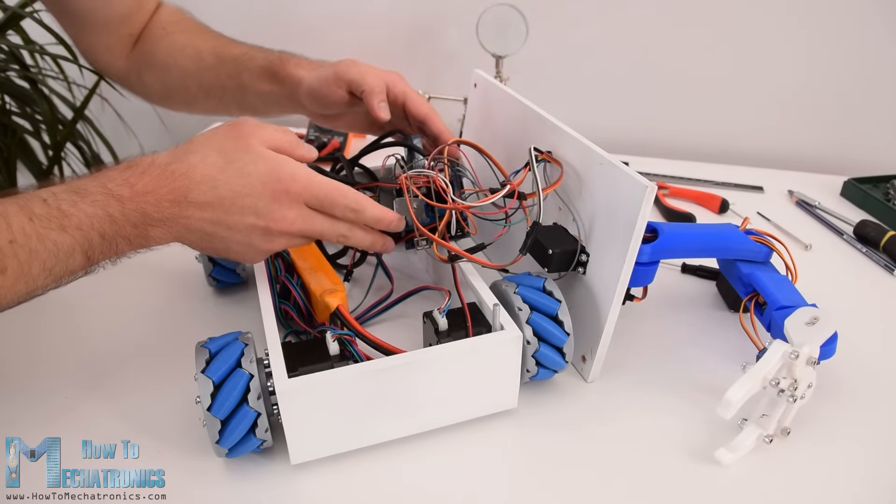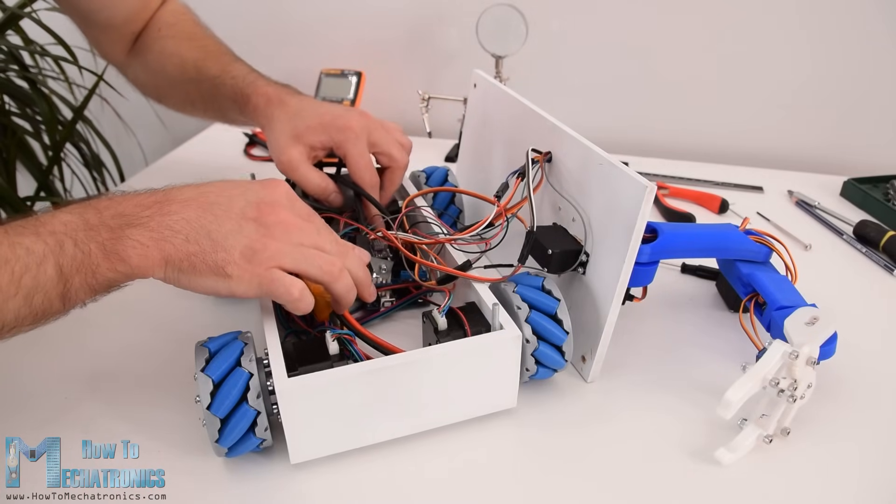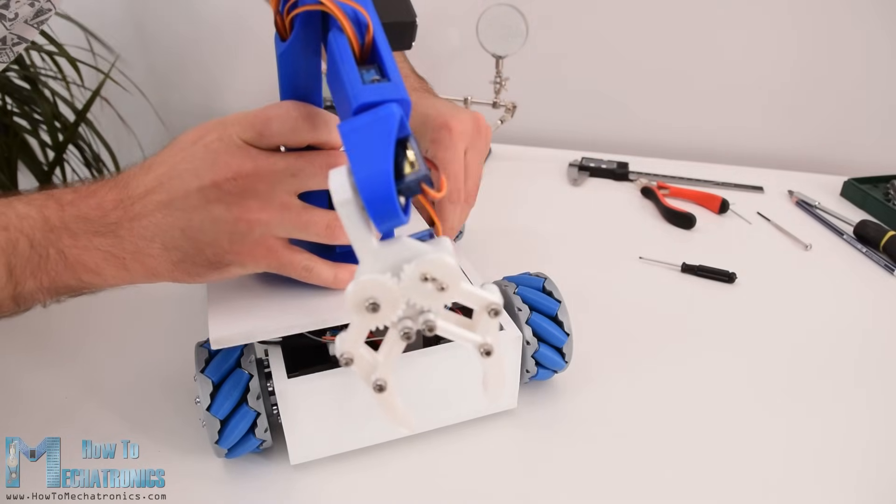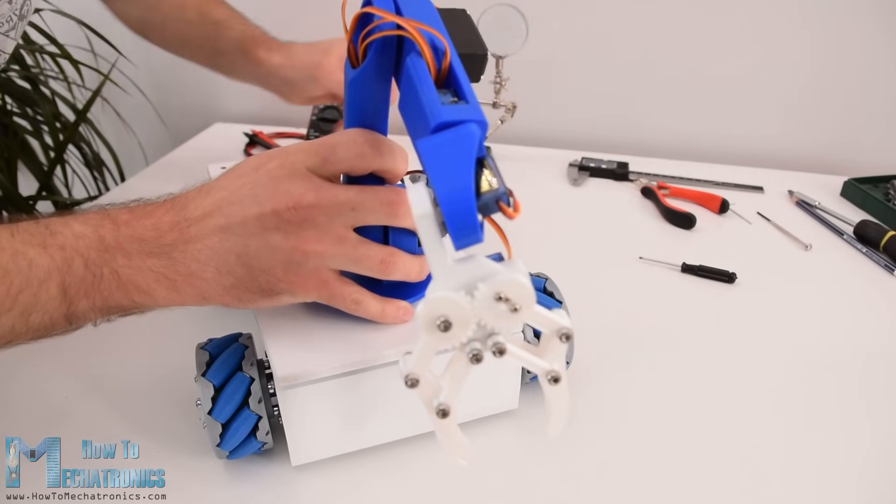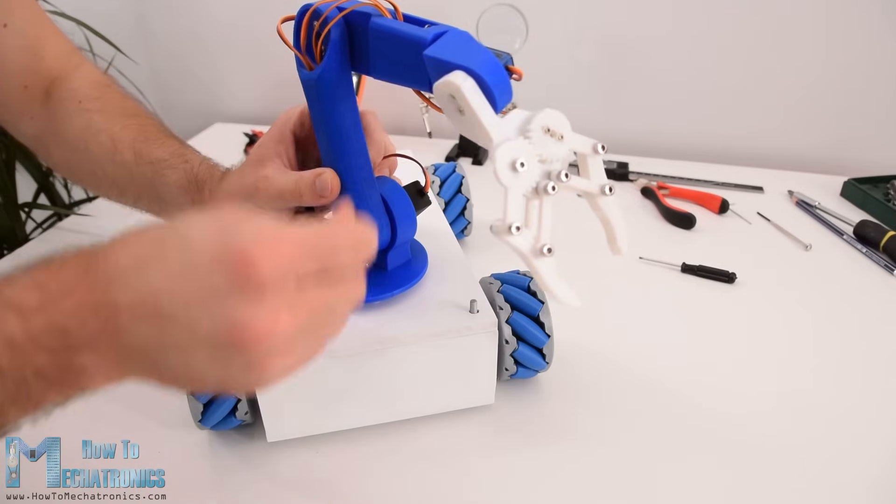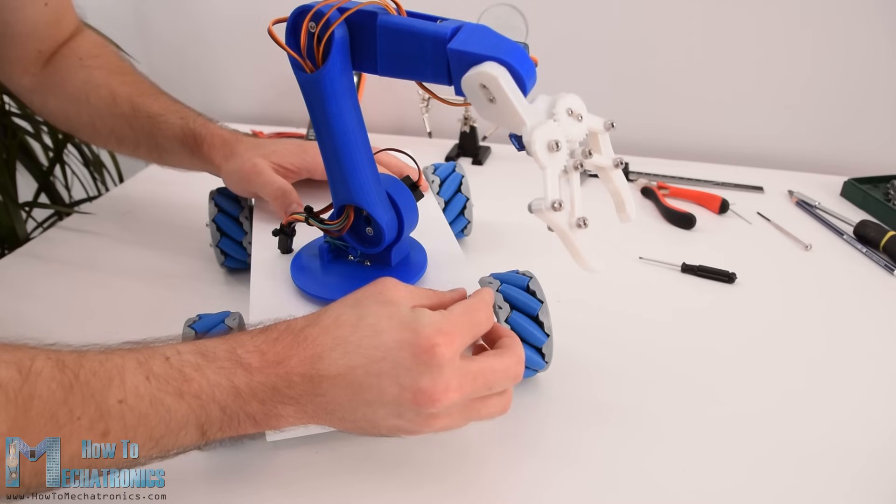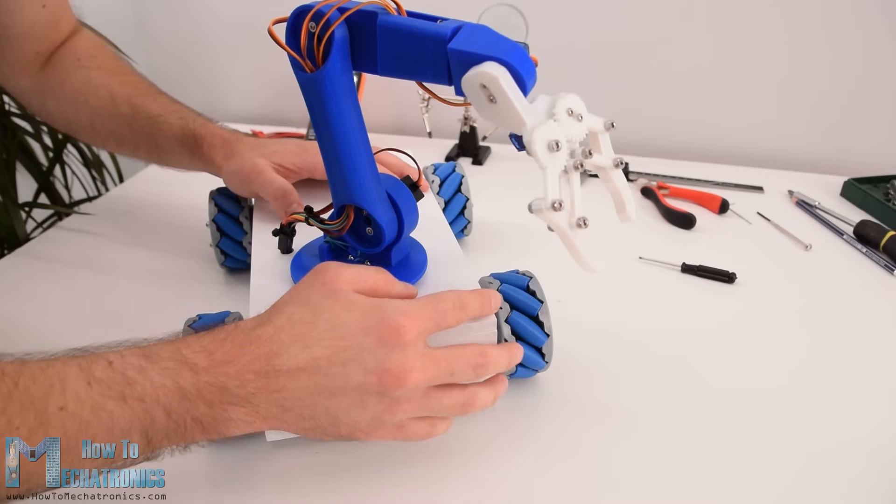I connected the servos signal wires to the Arduino digital pins from number 5 to 10 and for powering I used the 5V pin header on the PCB. Finally I pushed all the wires inside the platform and secured the top plate to it using the two nuts. And that's it.